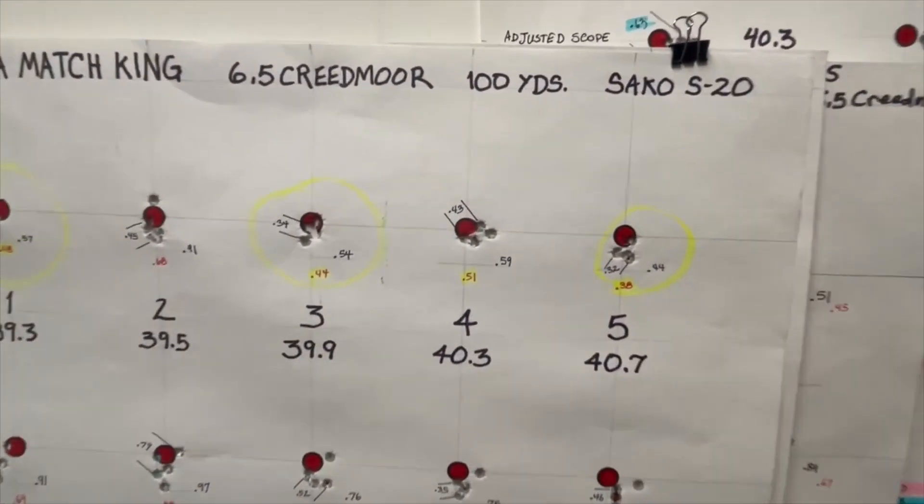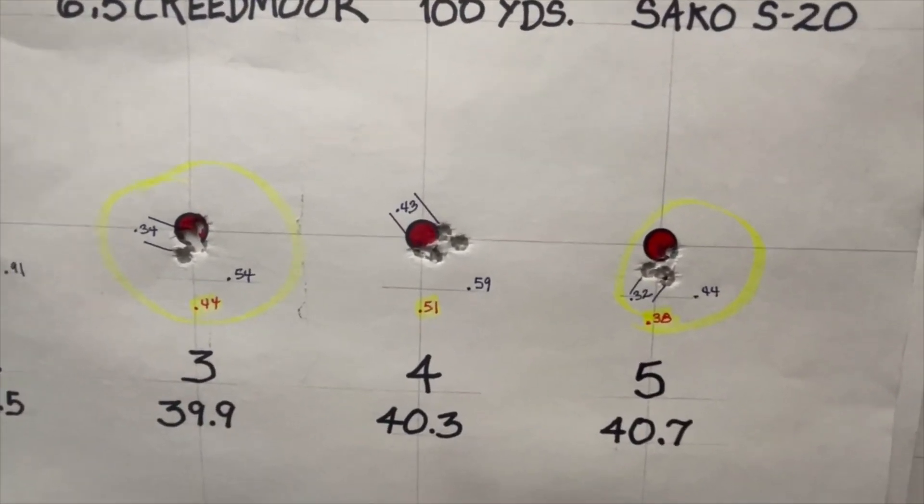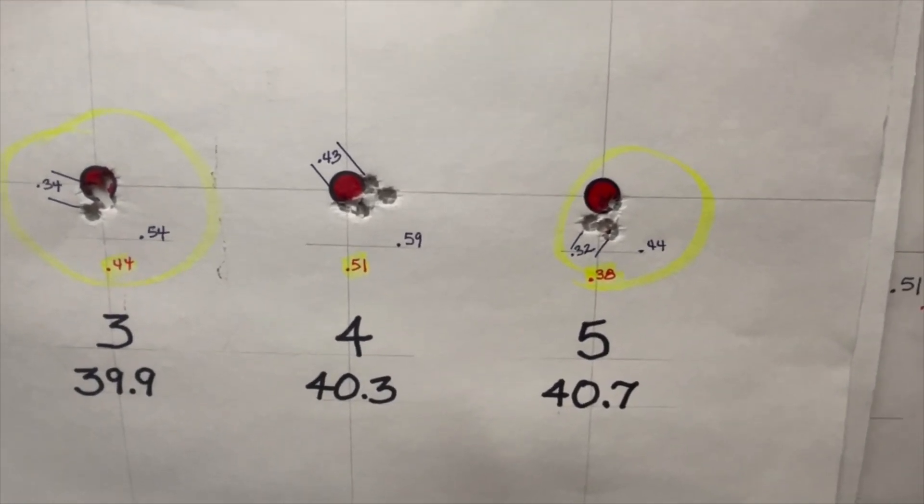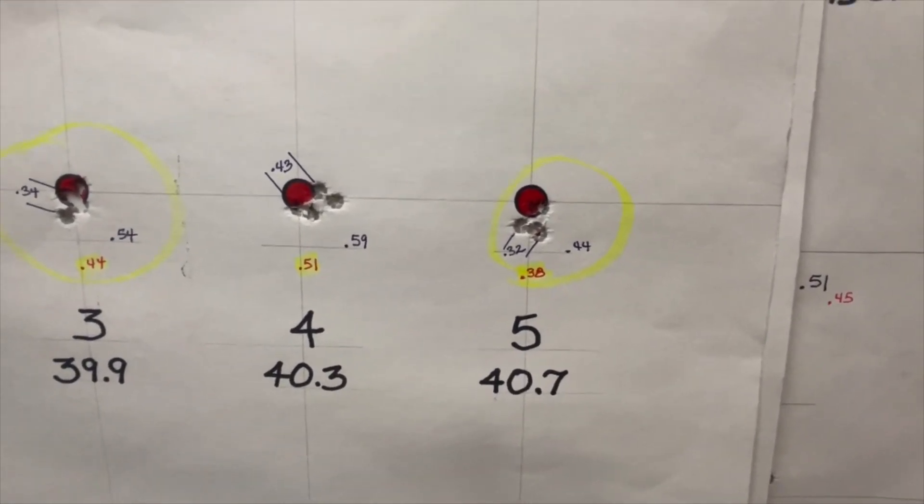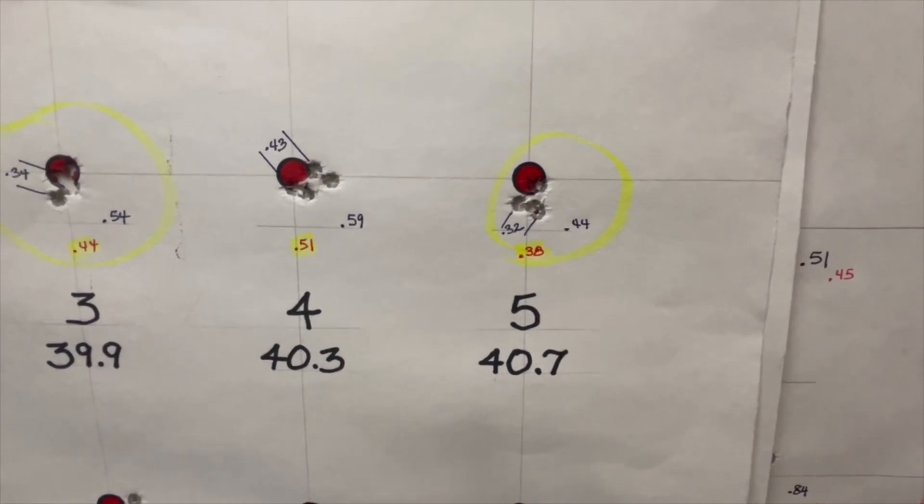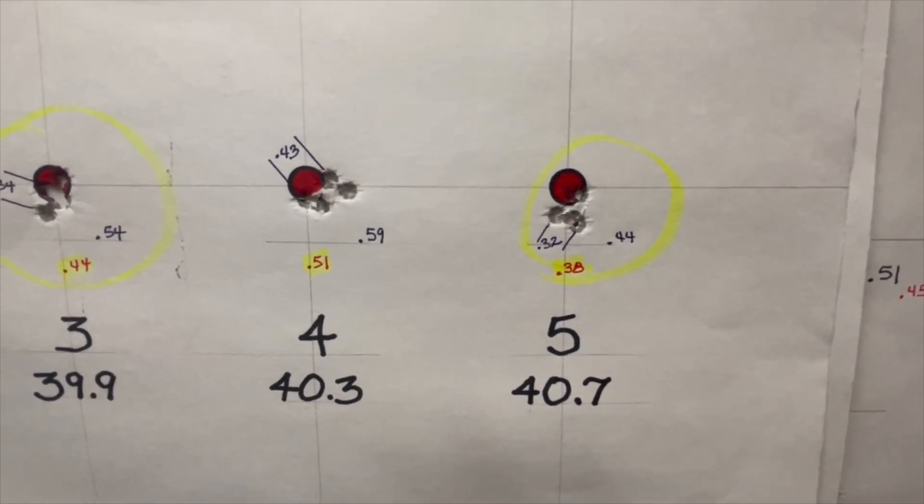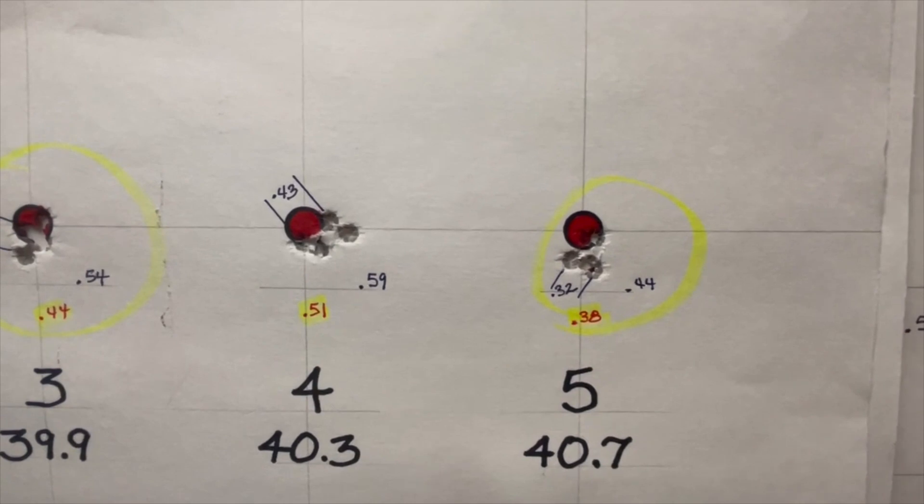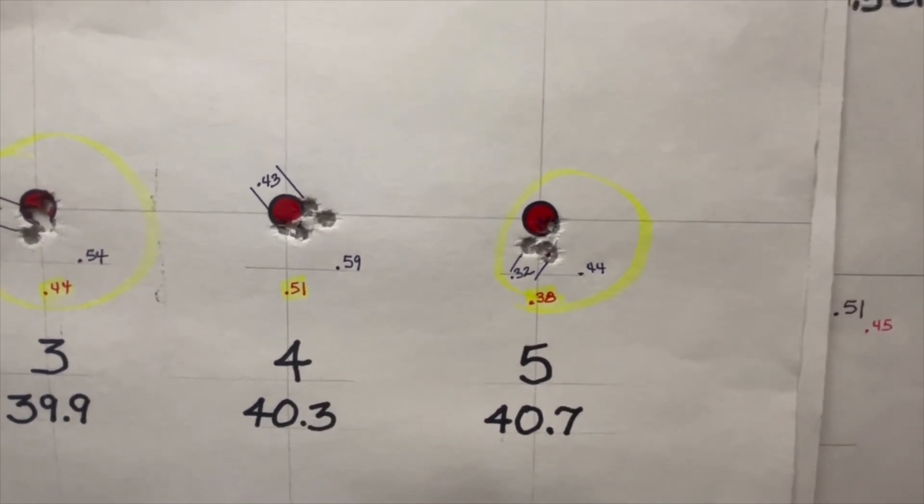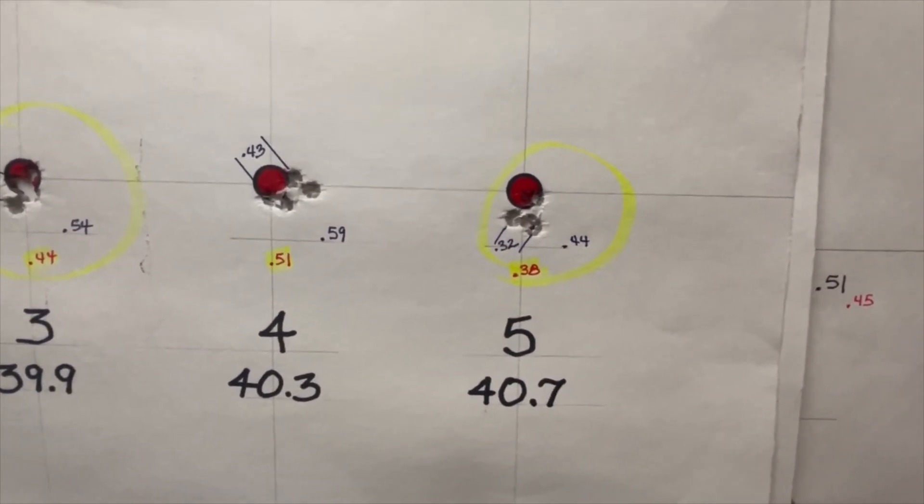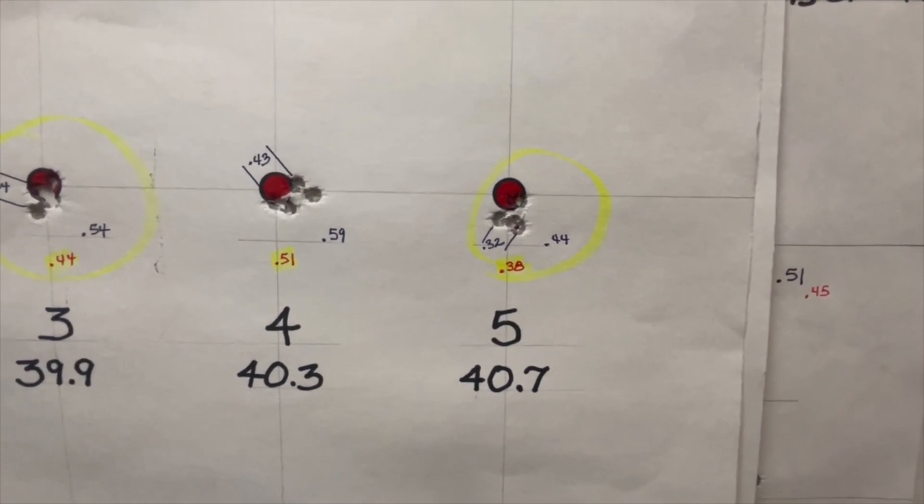We found very good results at the 40.3 and 40.7, with the 40.7 being the best. We had groups at an overall spread of 0.44 inches. So that's the load that we're going to go with, and now we're going to work on seating depth.